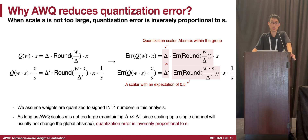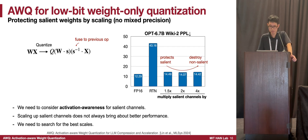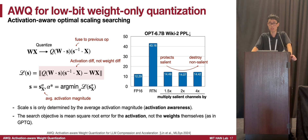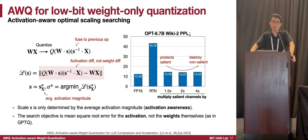There is an assumption for this analysis: s must not be too large. If s is very large, scaling up some channels would cause the absolute max of the entire tensor to scale up as well, breaking the analysis. This necessitates our scaling search in AWQ. Our scaling search is guided by the activation distribution rather than the weight distribution, which we find produces better decisions for the optimal scaling factor.